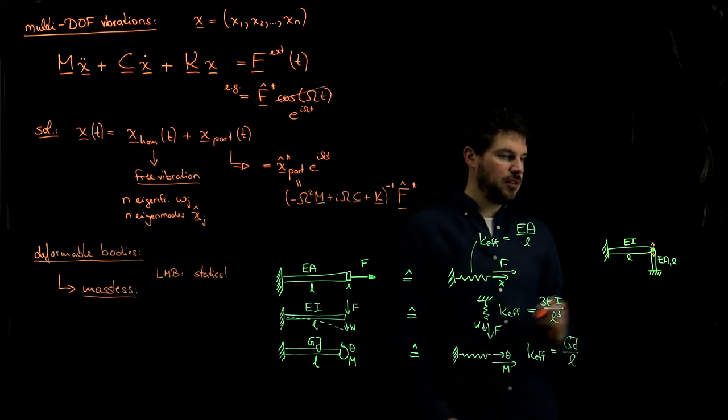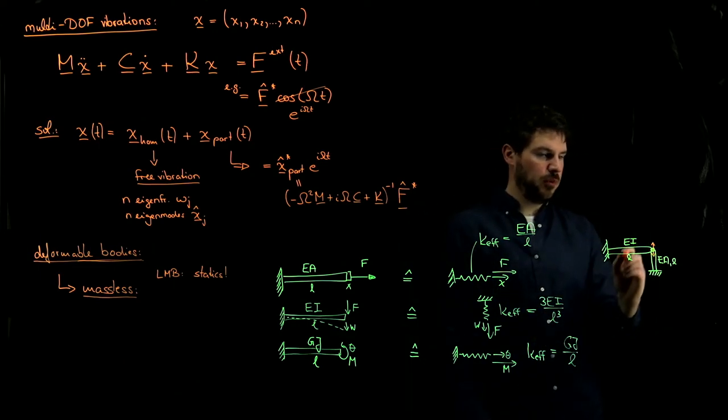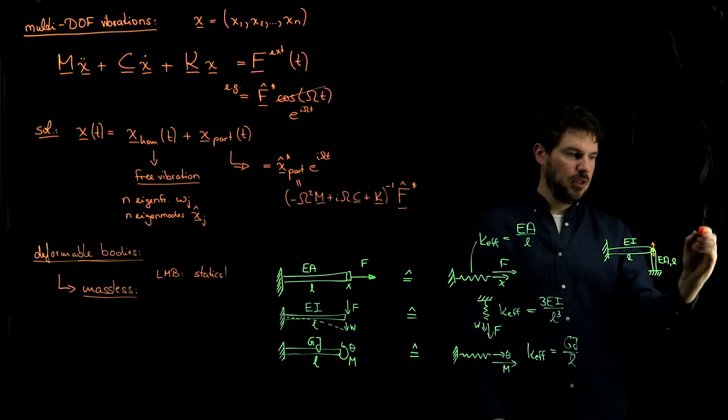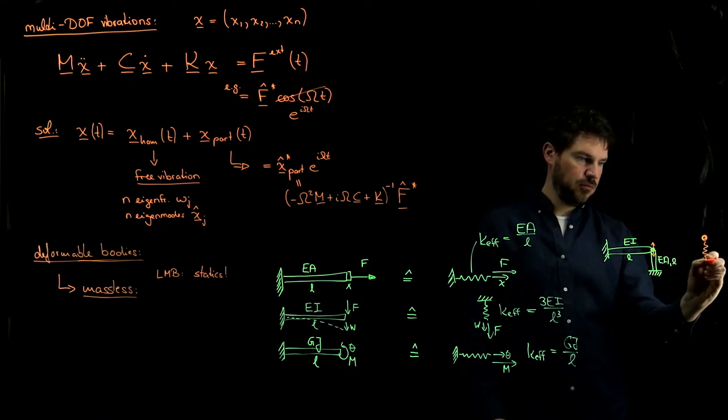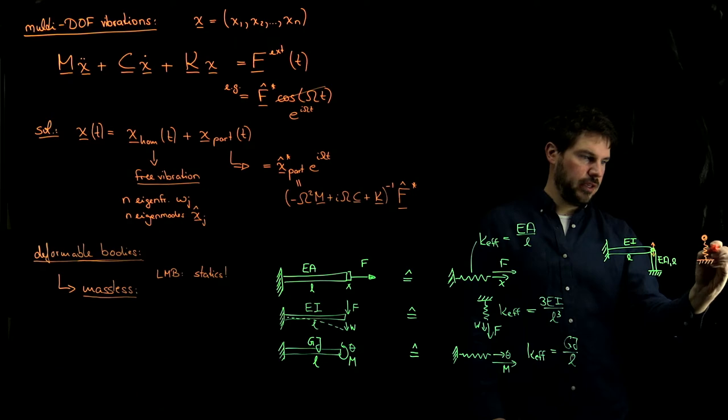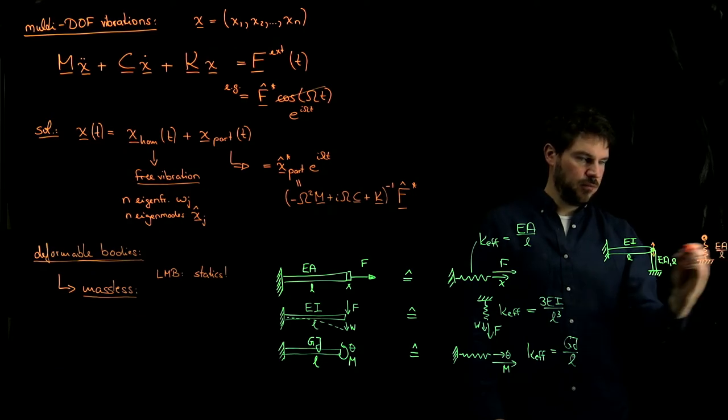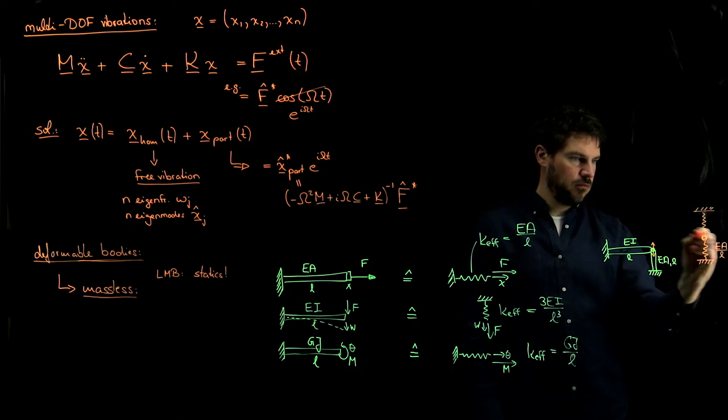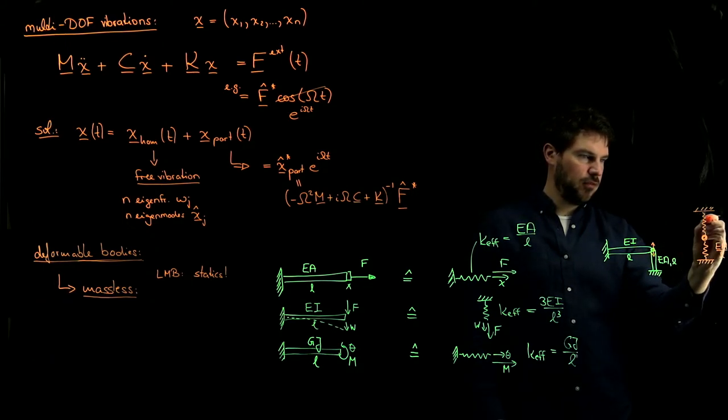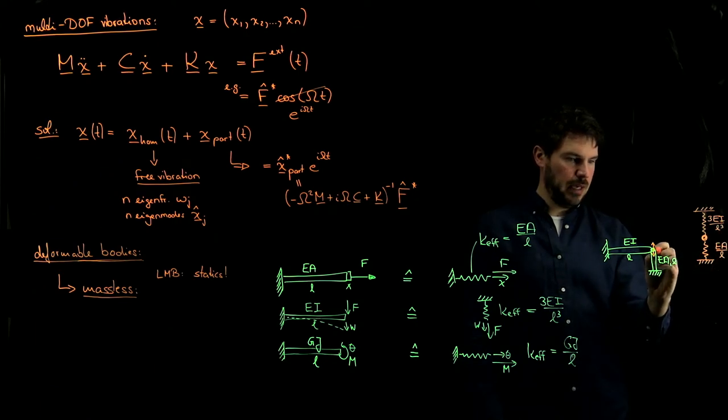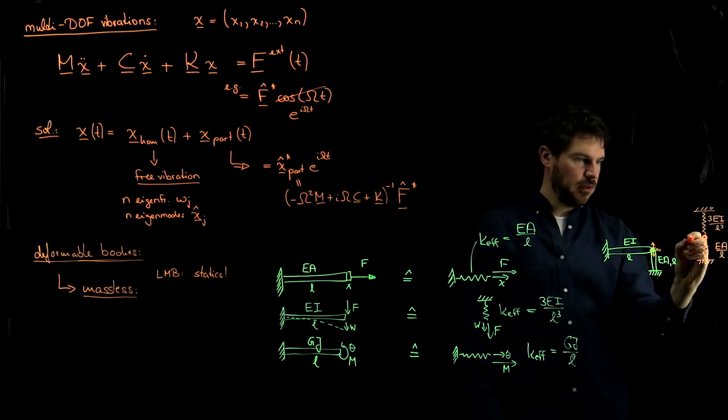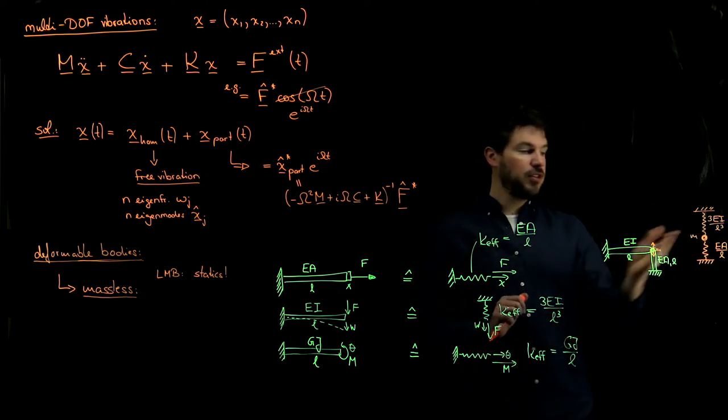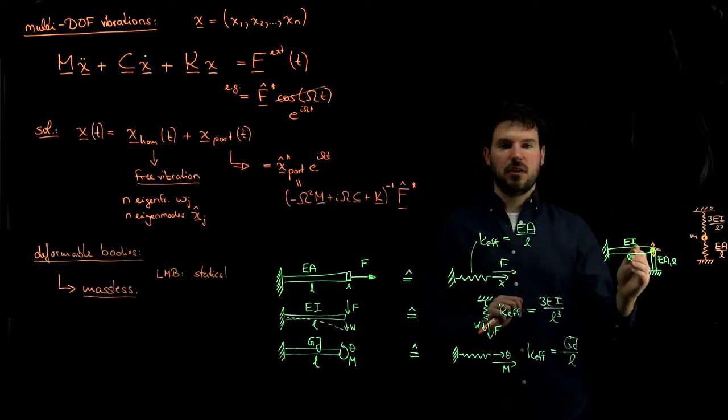Now we can easily replace this by two springs which are put in parallel. So in this particular case I would have this point here attached to a spring with a K effective of EA over L. But then it's also attached to another spring and this has a K effective of 3EI over L cubed. And if you put a mass over here, this is a very simple system whose degree of freedom would be the motion of the particle.